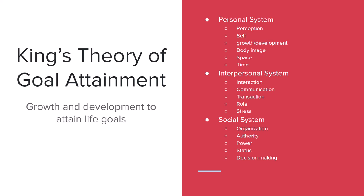King's Theory of Goal Attainment is about growth and development to attain life goals. This model includes three systems that interact with each other: the personal, interpersonal, and social systems. In a patient-nurse relationship, the patient's perception of the nurse will affect their health outcomes, and the nurse's interaction and communication with the patient will have an effect on the personal system. The hospital's or clinic's systems of organization and authority will affect the nurse's actions and relationships with the patient.